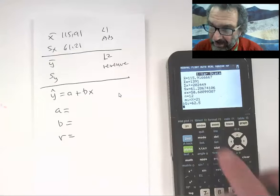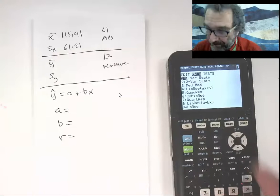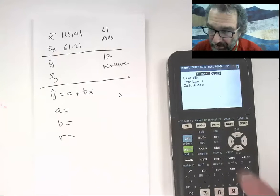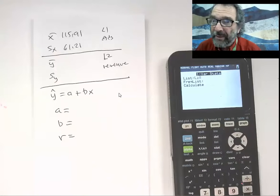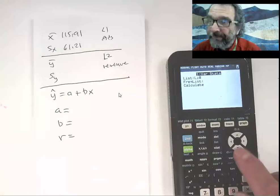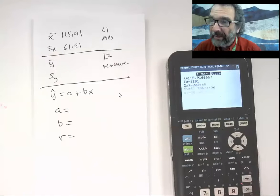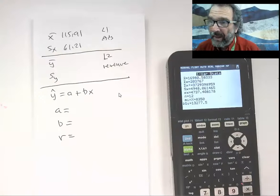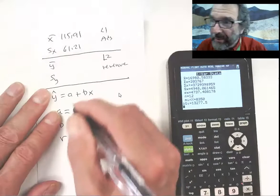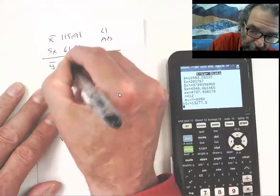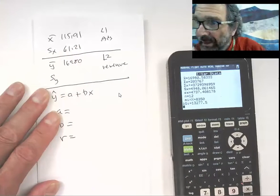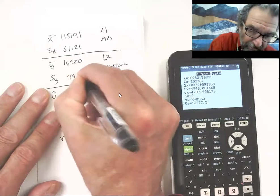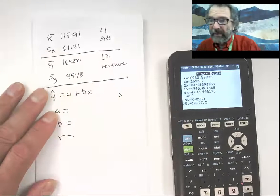Then I'll go back to stat, calc again, one variable. I'll pick list two, second two. Those are the y's. So those are the response variables, the revenue. Go down to calculate, hit that, and now I get the y bars, 16,980, and Sy, 49,48, like that.